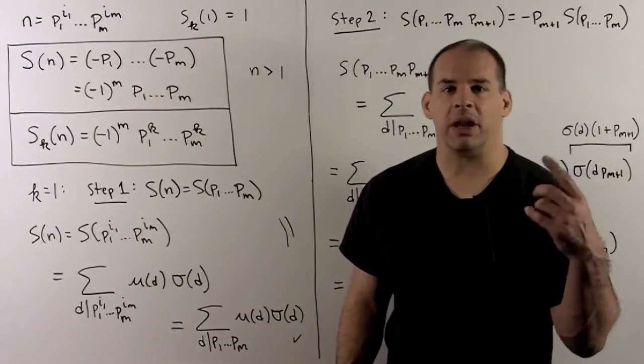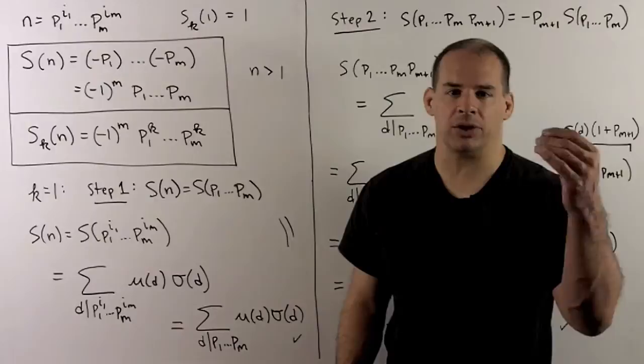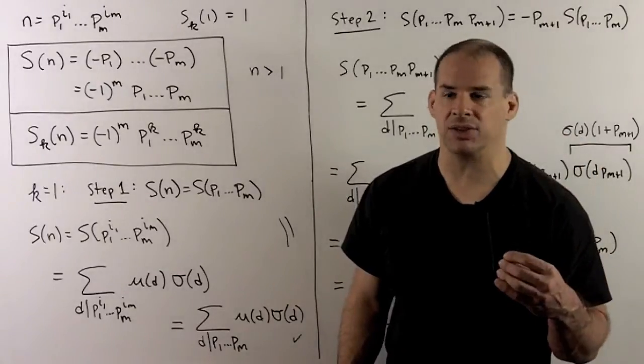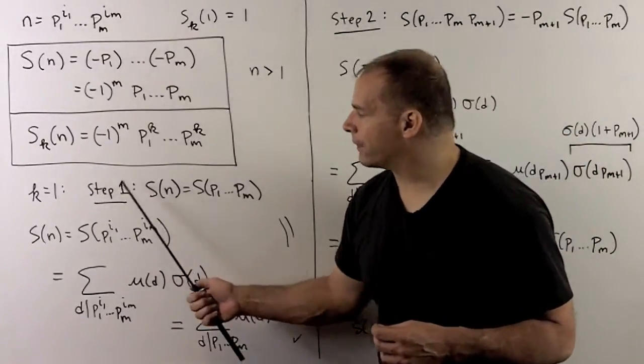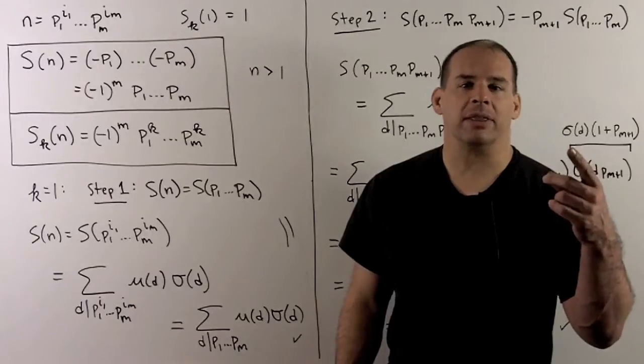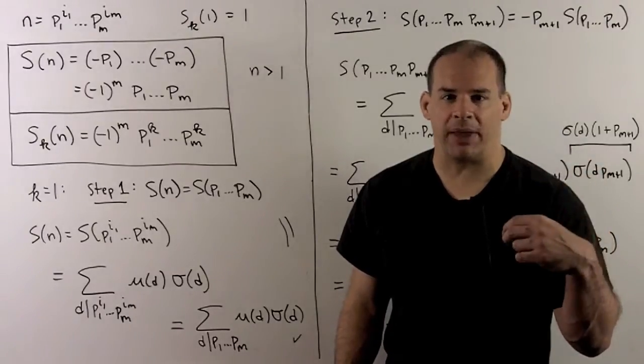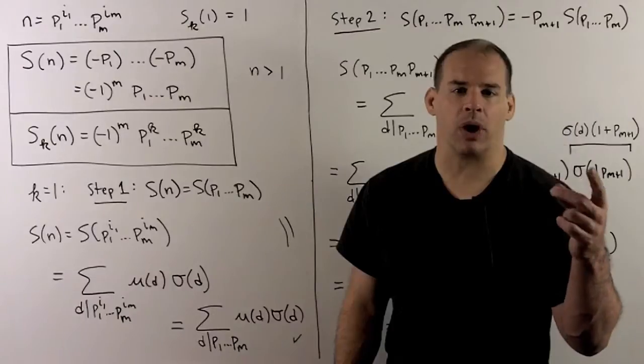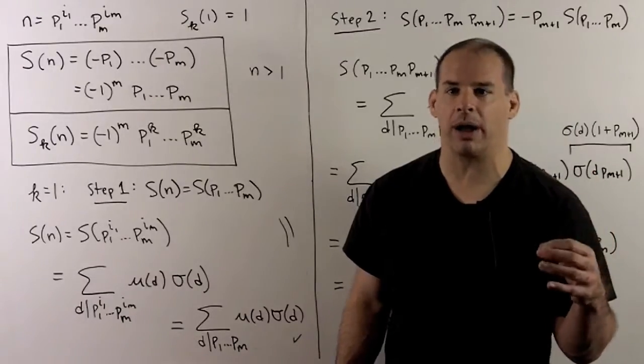Now to show this, it will be enough to assume k equals 1, and then you can just go through and replace the k's. First step, we're going to show that the value of S doesn't change if we strip out the exponents. Then we'll just calculate for S on a product of distinct primes.